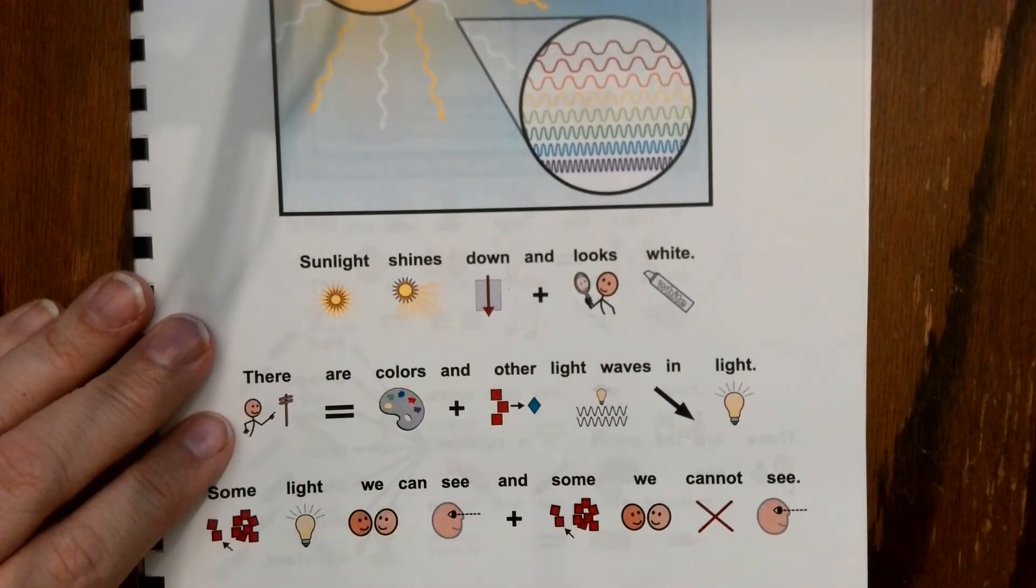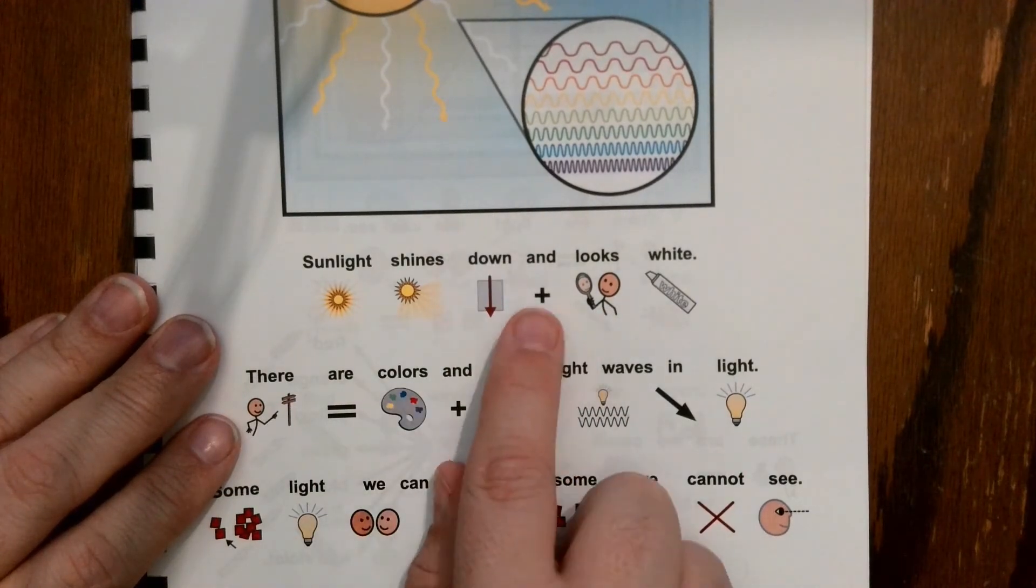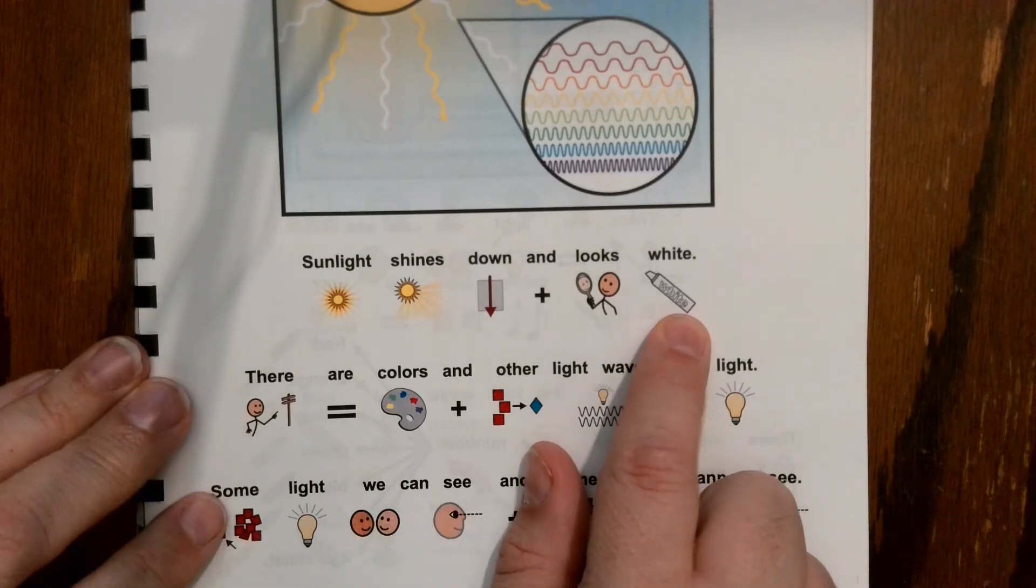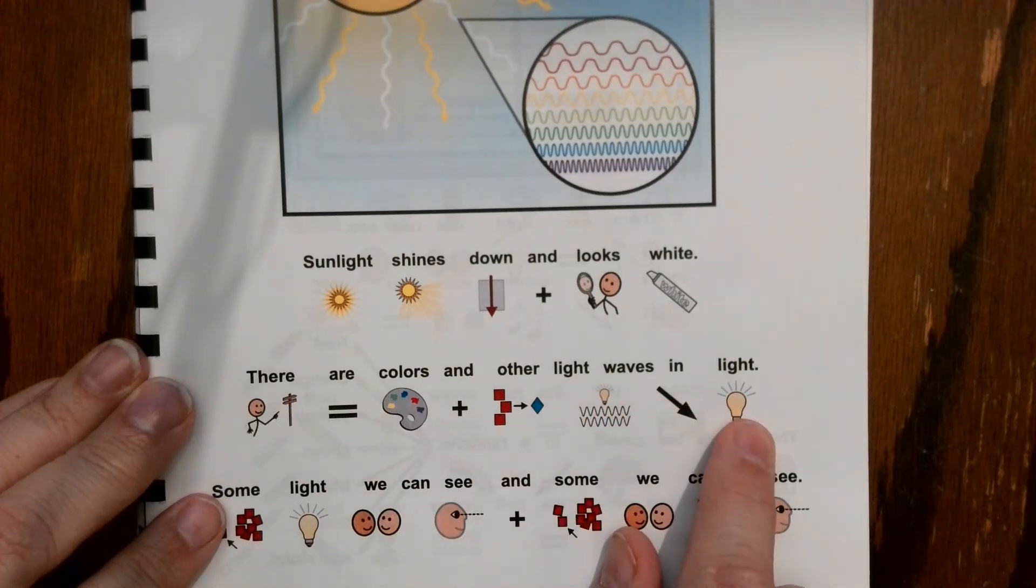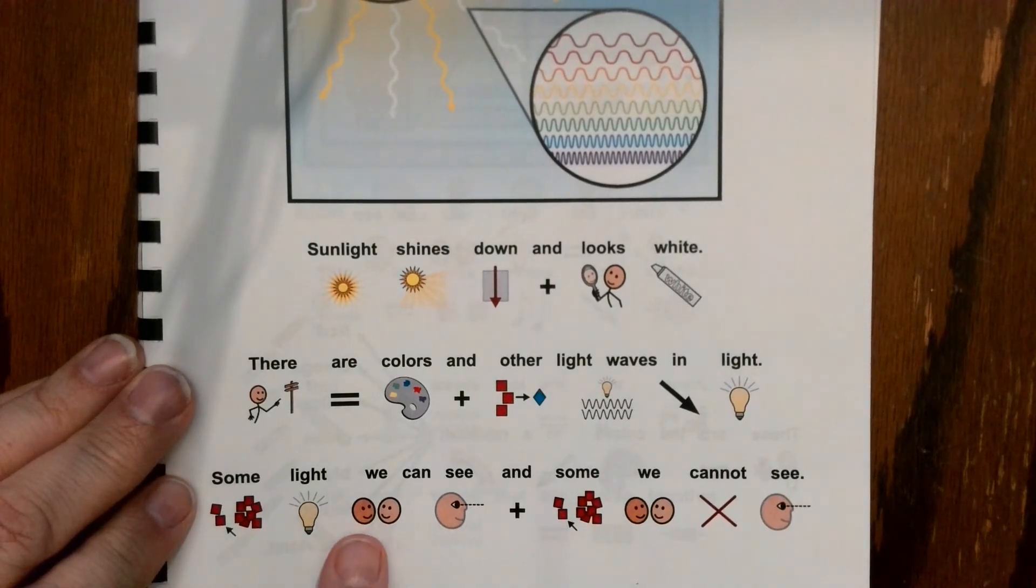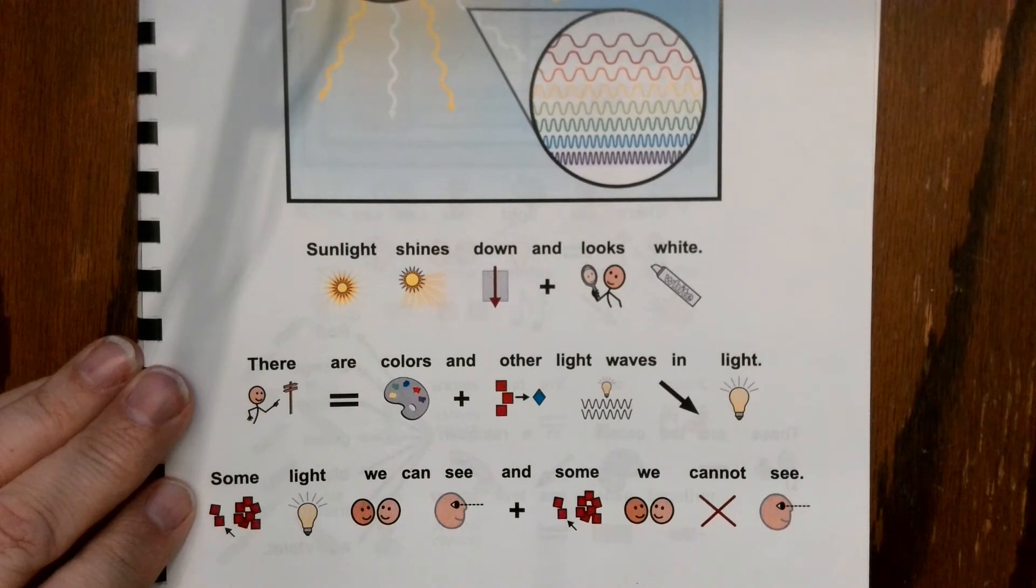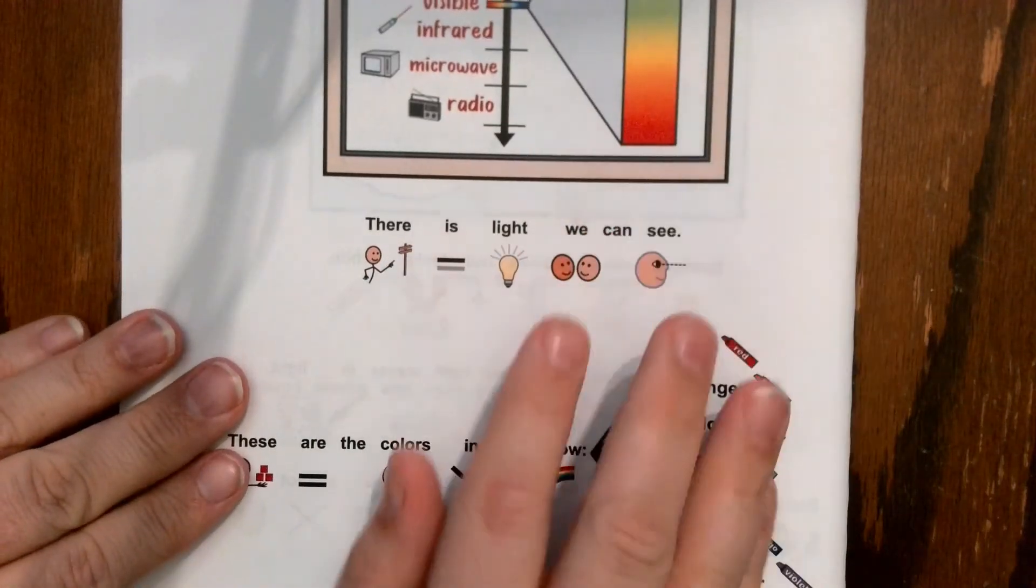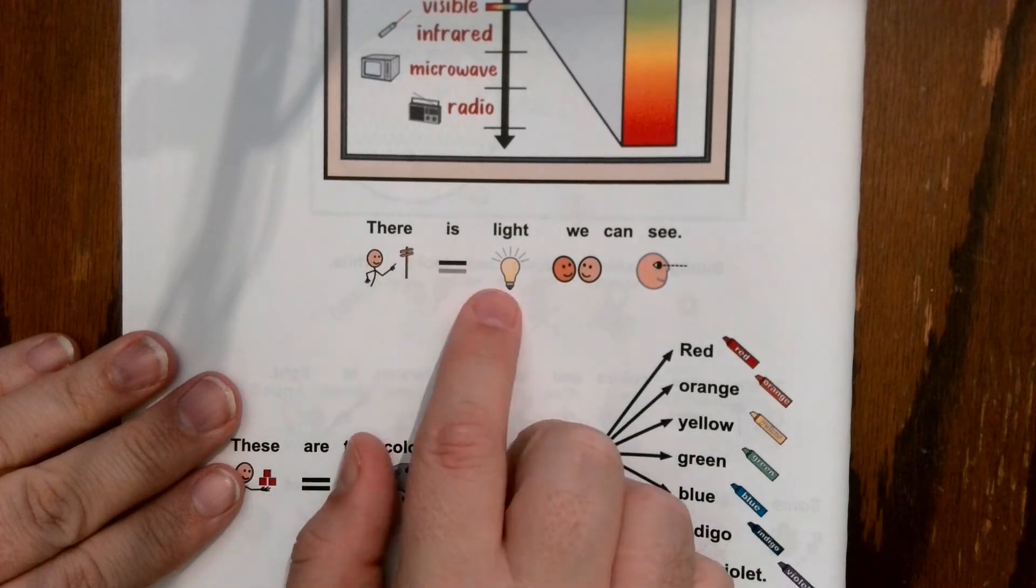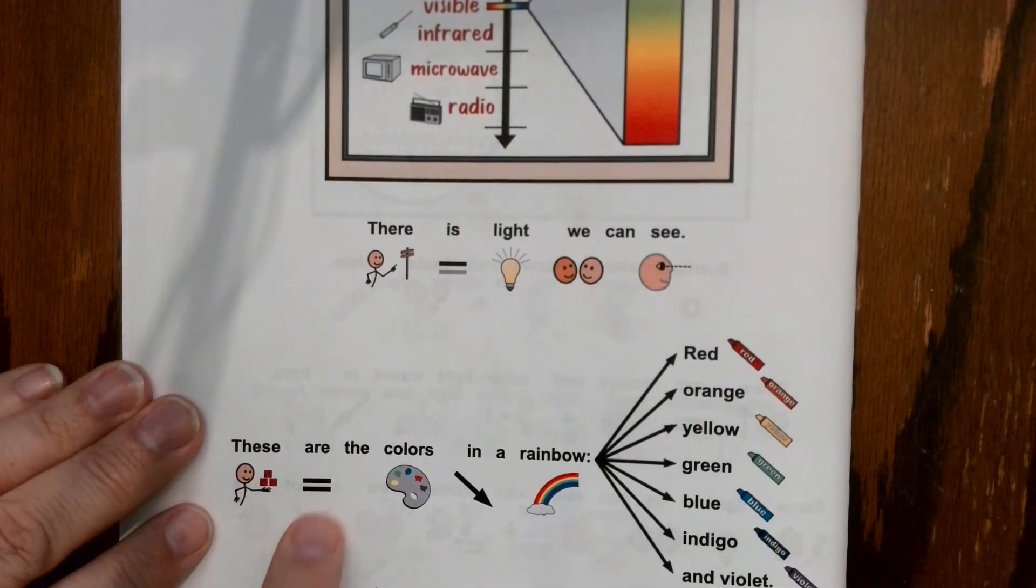Turn the page. Sunlight shines down and looks white. There are colors and other light waves in light. Some light we can see and some we cannot see.